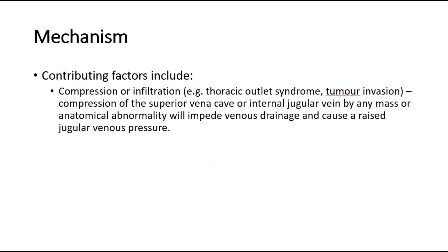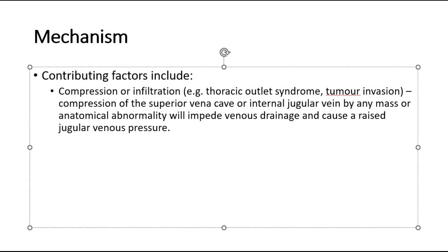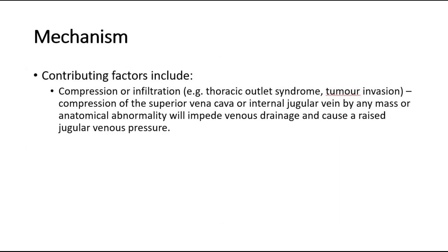Compression or infiltration, in cases of thoracic outlet syndrome or tumor invasion: compression of the superior vena cava or internal jugular vein by any mass or anatomical abnormality will impede venous drainage and cause a raised jugular venous pressure.